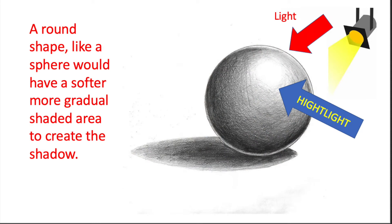A round shape, like a sphere, would have a softer, more gradual shaded area to create the shadow. Notice the arrows pointing from which direction the light is shining and also notice the highlight.